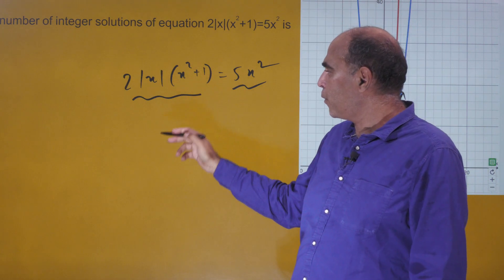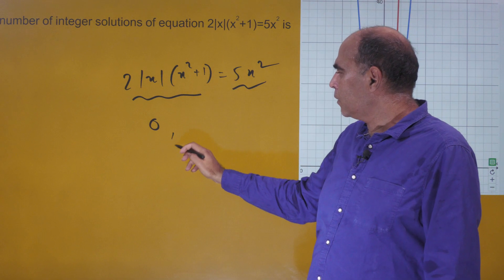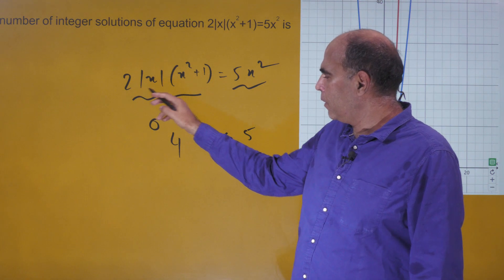When you start looking for it, x = 0 is the first solution, which is very obvious. At x = 1, this is 4, that's 5, not equal. At x = 2, we get 20 on the left-hand side and 20 on the right-hand side, and that's equal. So 2 is a solution.